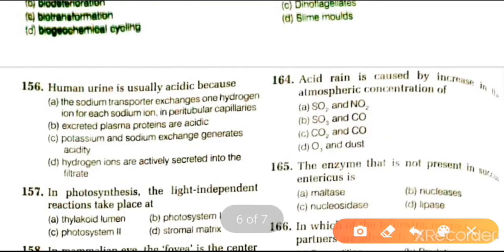Next question: human urine is usually acidic because sodium transporter exchanges one hydrogen ion for each sodium ion in particular in tubular capillaries; plasma proteins are acidic; potassium and sodium exchange generates acid; or hydrogen ions are actively secreted into the filtrate. The answer is hydrogen ions are actively secreted into the filtrate.